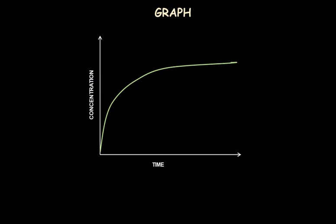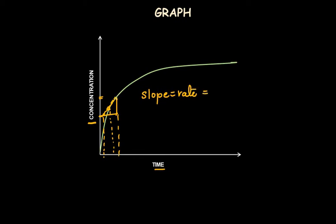This is the graph of increasing concentration of products versus time. As the reaction proceeds, the concentration of product increases. At any given particular time, we can calculate the rate by drawing a tangent at that particular time and finding the gradient of this tangent — that is the change in concentration divided by the change in time. So the slope or gradient gives us the rate: change in concentration of product divided by change in time.